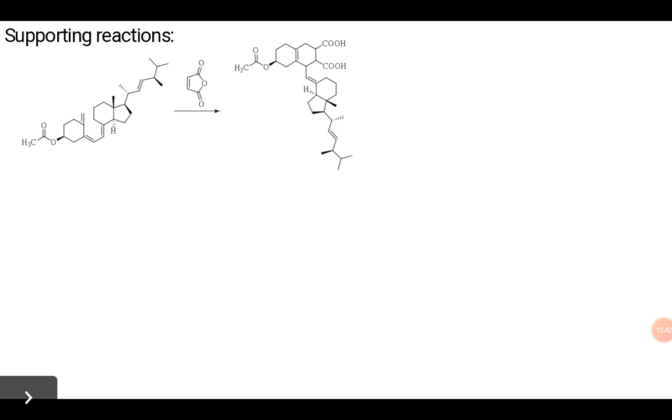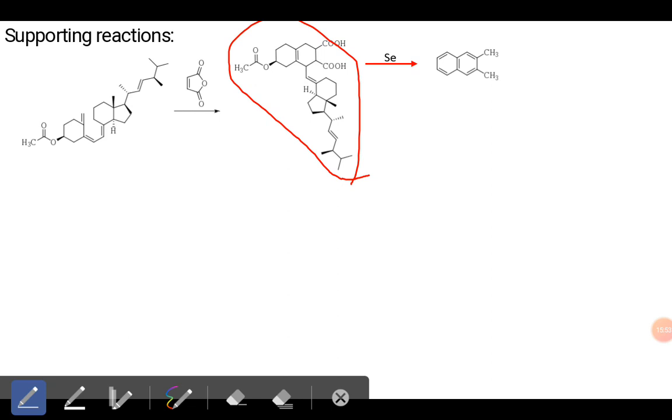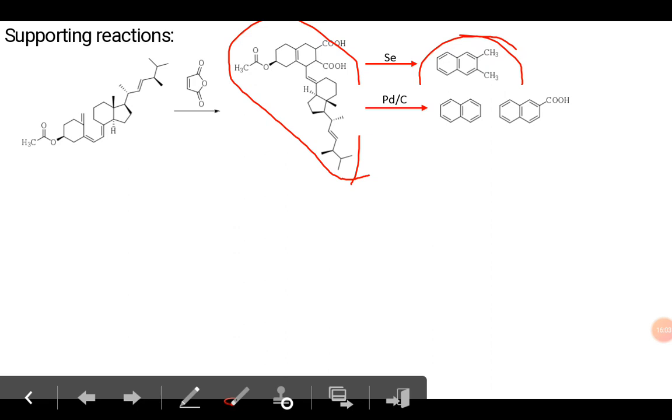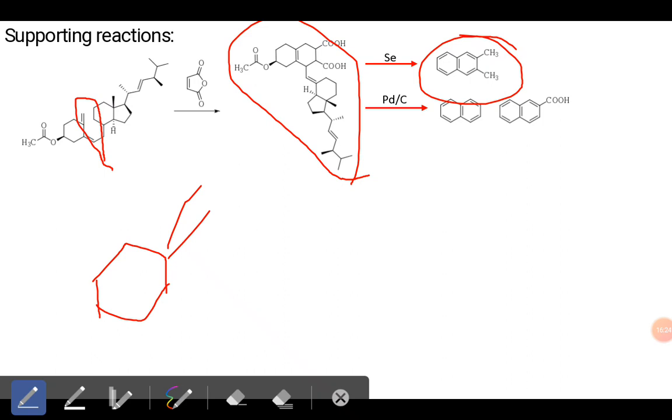Upon adduct formation they got this compound, which upon selenium dehydrogenation gave naphthalene. In palladium catalyzed hydrogenation they got naphthalene and naphthalene carboxylic acid. This is possible only when maleic anhydride attacks this double bond, across the structure, giving that compound. Then there is possibility of formation of this bicyclic ring, which upon dehydrogenation can give naphthalene.